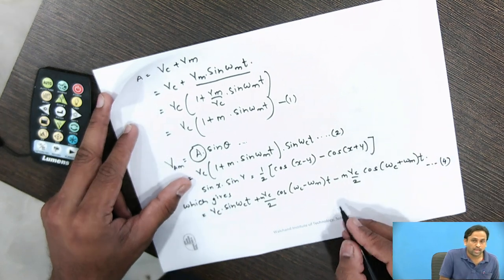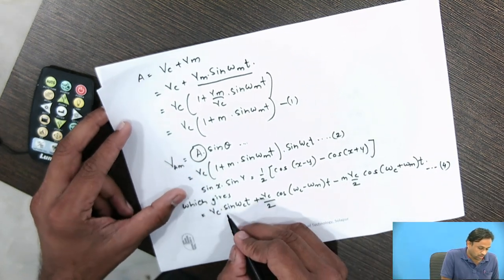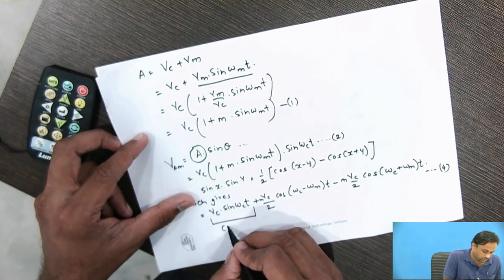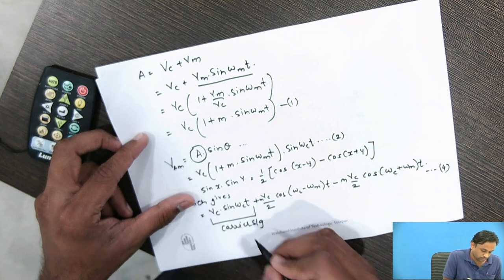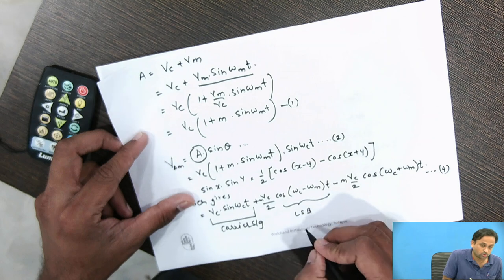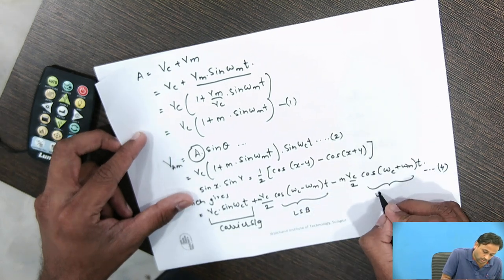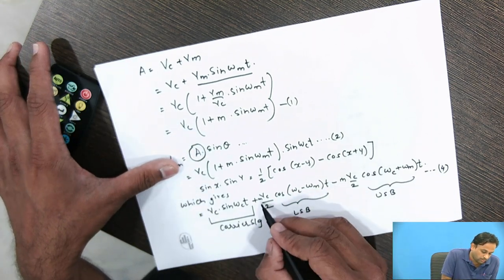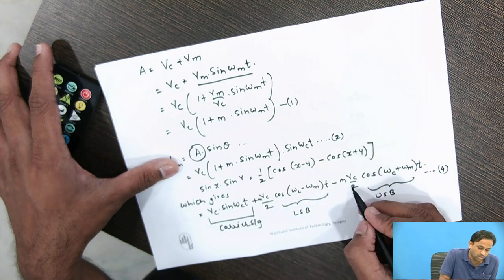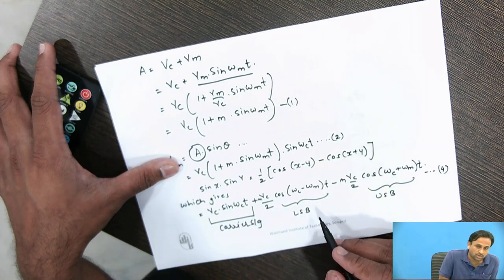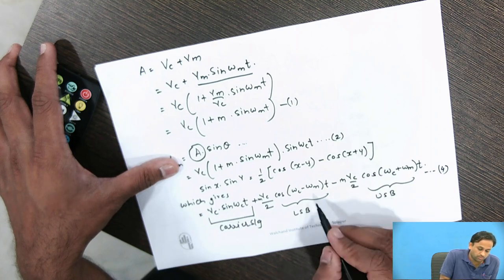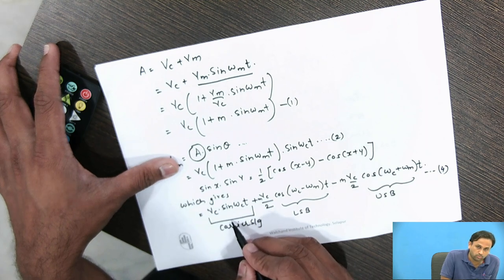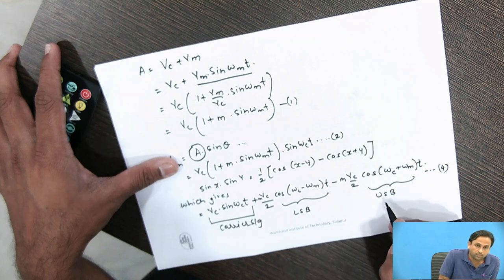This is the final equation for amplitude modulation. We can see it has three components: the first term Vc·sin(ωc·t) is the carrier signal; the second term is the lower sideband (LSB) at frequency (ωc − ωm); and the third term is the upper sideband (USB) at frequency (ωc + ωm). The amplitudes of both LSB and USB are mVc/2, and both sidebands carry the same information.